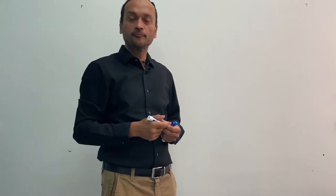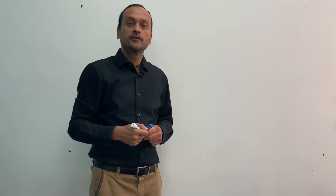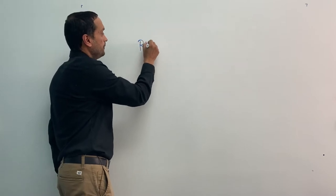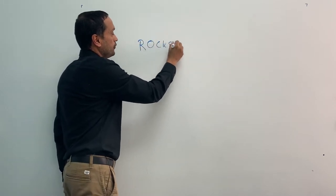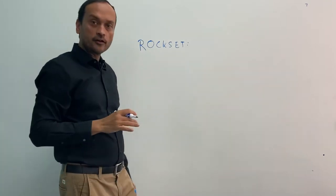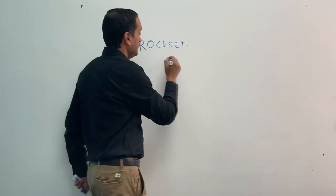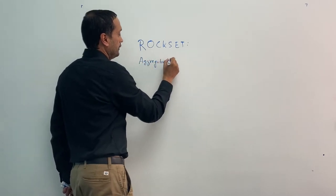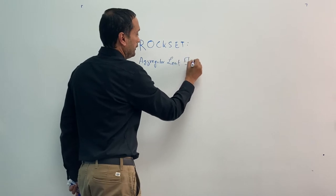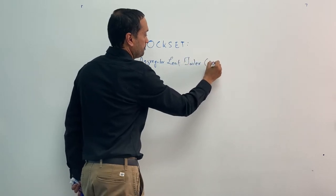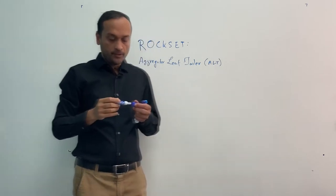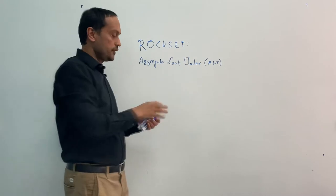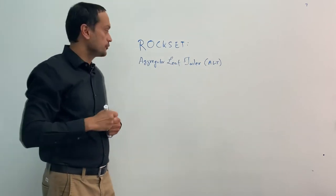Hi, my name is Dhruva. I'm here to talk about some of the internal architecture pieces in Rockset. As most of you are familiar, I'm going to talk about Rockset's internal architecture. We use something called the Aggregator Leaf Tailor architecture, and that powers Rockset. I've done a whiteboard session on this earlier which talked about a lot of these things. Today in this session, I'm going to focus mostly on the Tailor.